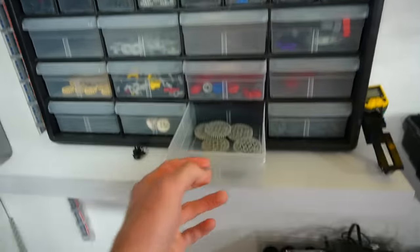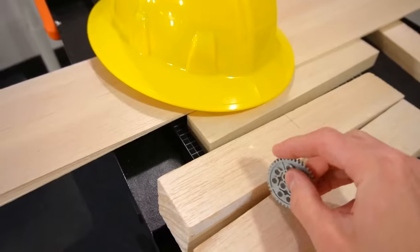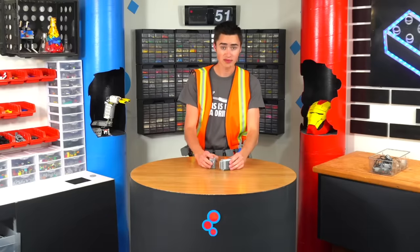So the first thing we need to do to build the table saw is figure out what we're going to use as a blade. I was thinking we could use a gear because it can spin super fast and it has a bunch of teeth which I think could cut through our pieces pretty good.